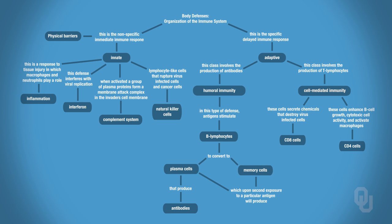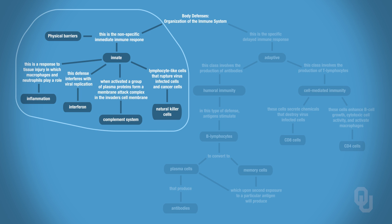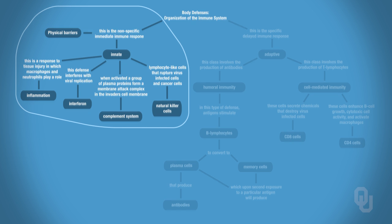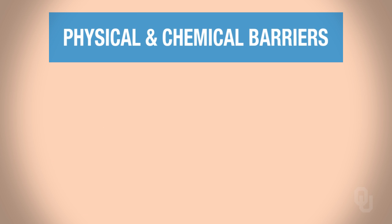Here's a flowchart to help organize the innate versus the adaptive response — use this as your roadmap. We're discussing innate responses in this part. Let's start with the physical and chemical barriers, which you can think of as the wall of the castle.